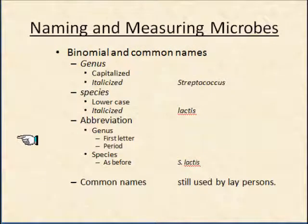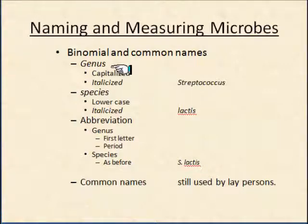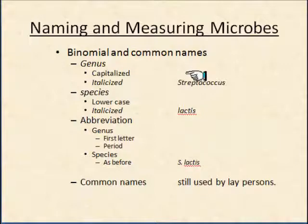Common names are still used by laypersons — a cat is still Felis domesticus. Those still exist, but you should know how these are written. There will no doubt be a question on the test asking you to identify the proper way to write some genus species name.